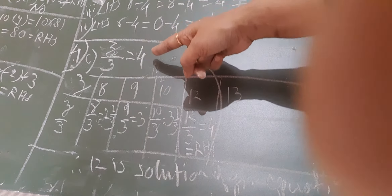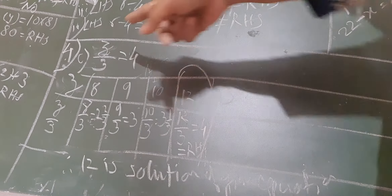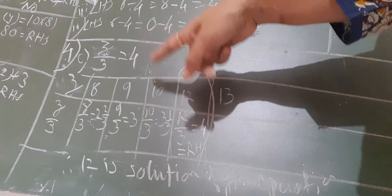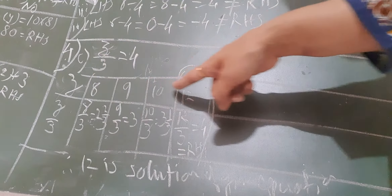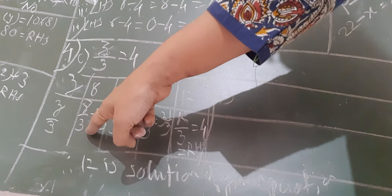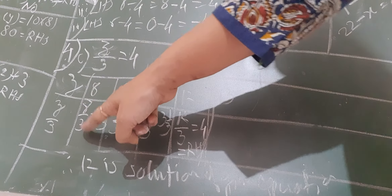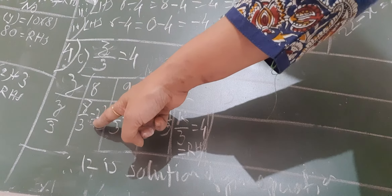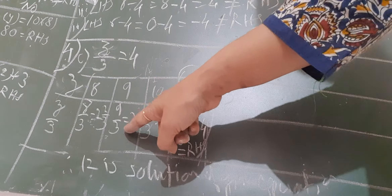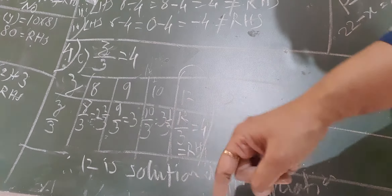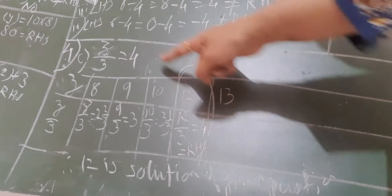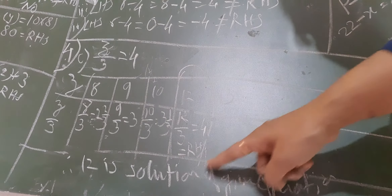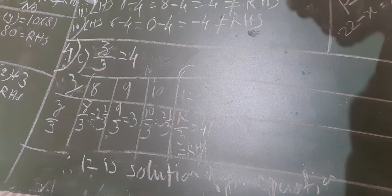In the fourth question, part C: z divided by 3 should equal 4. Left hand side is z/3 and right hand side is 4. For z = 8, we get 8/3, which is 2 and 2/3. For z = 9, it's 9/3 = 3. For z = 10, it's 10/3. For z = 12, it's 12/3 = 4, which equals the right hand side. Hence left hand side equals right hand side and z = 12 is the solution. You can solve other problems similarly.